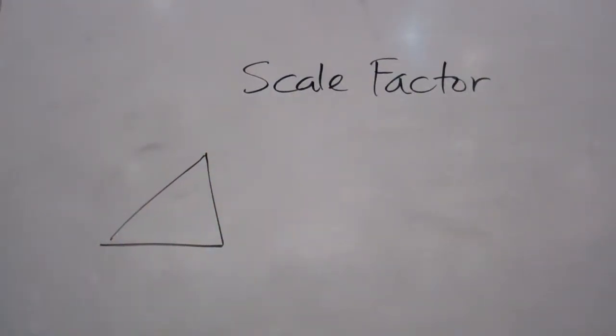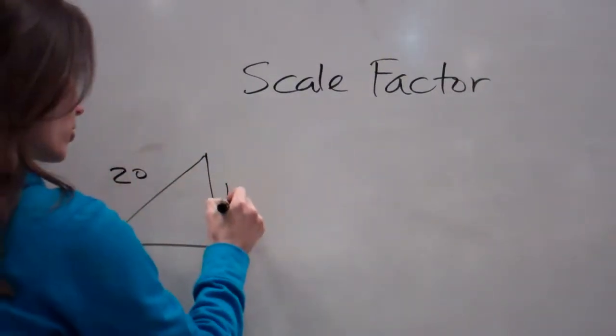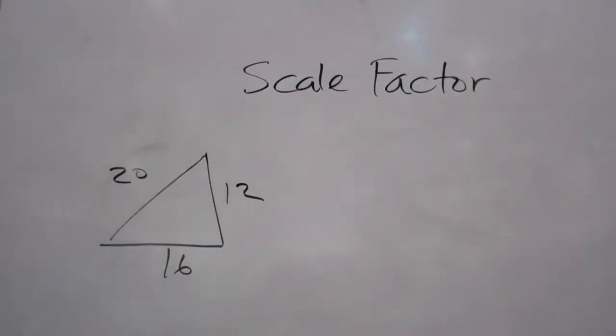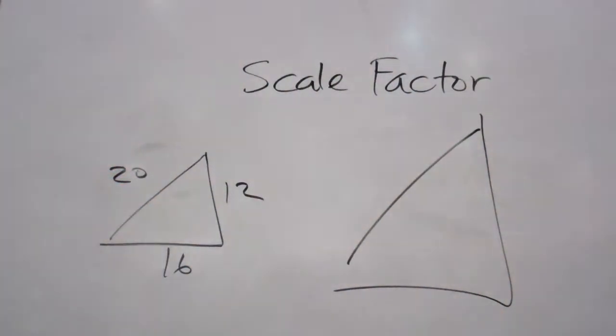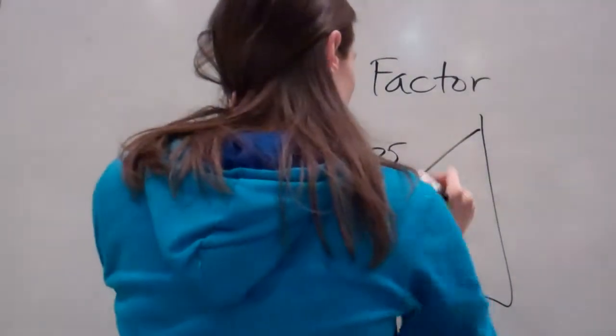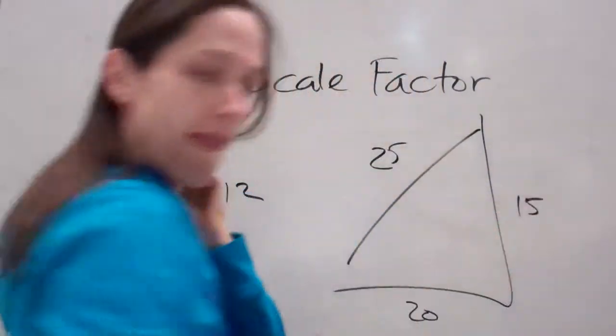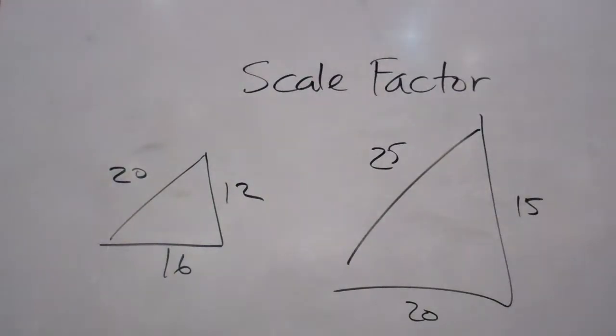So, let's do this. Everybody write 20, 12, 16. That's of the small triangle. This is my big triangle. 25, 20, 15. Write that down.